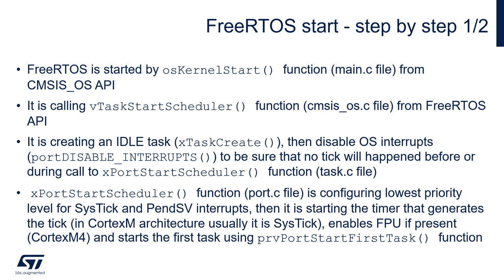Let's have a look at how FreeRTOS starts step by step. We start FreeRTOS by calling the osKernelStart function, usually from main.c. This uses the CMSIS OS API. This function calls vTaskStartScheduler within the cmsis_os.c file. This function is the FreeRTOS API one, and it creates the idle task using the function xTaskCreate. Then it disables operating system interrupts by calling the macro portDISABLE_INTERRUPTS, to ensure no tick will happen before we start the scheduler.